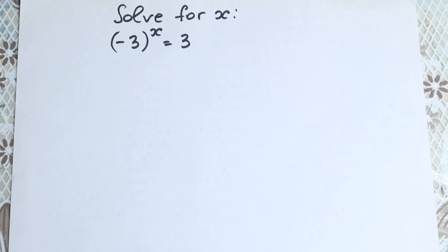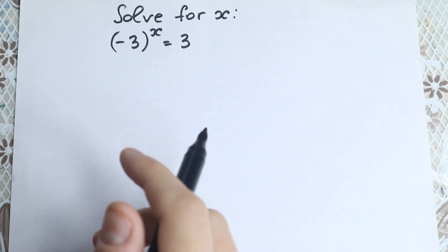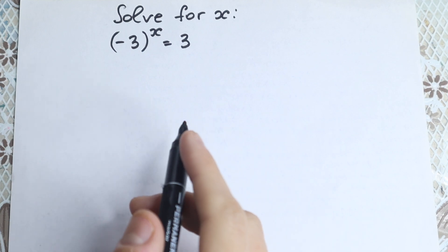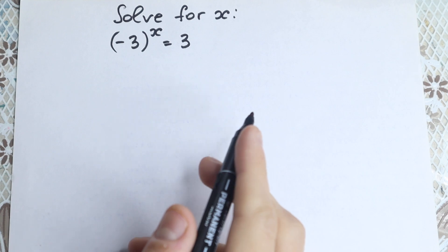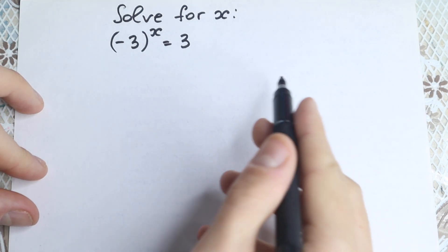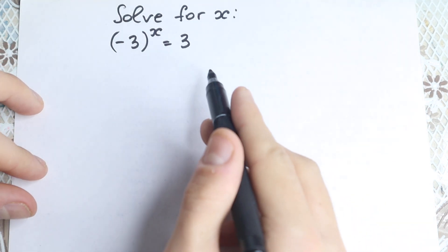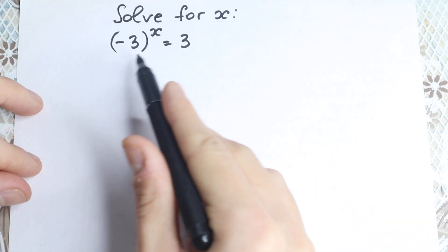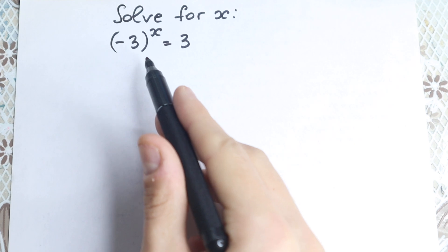Hello my friend, happy to see you here. We have a really interesting exponential equation today: minus 3 to the x equals 3. This is not like a common exponential equation — we're used to things like 2 to the x equals 3 or 10 to the x equals 3, as learned in school — but here we have minus 3 to the x.